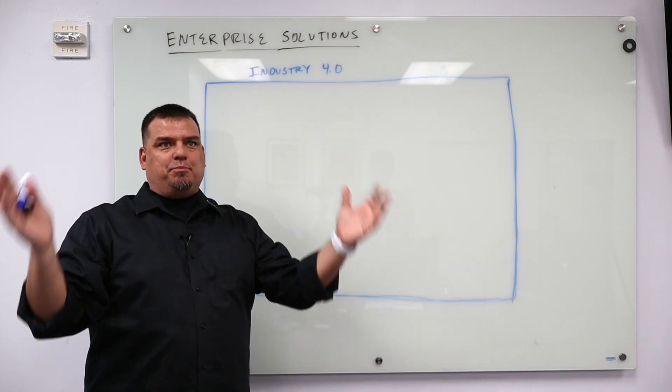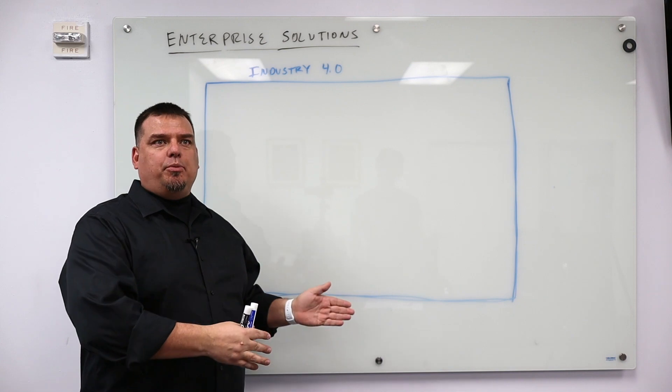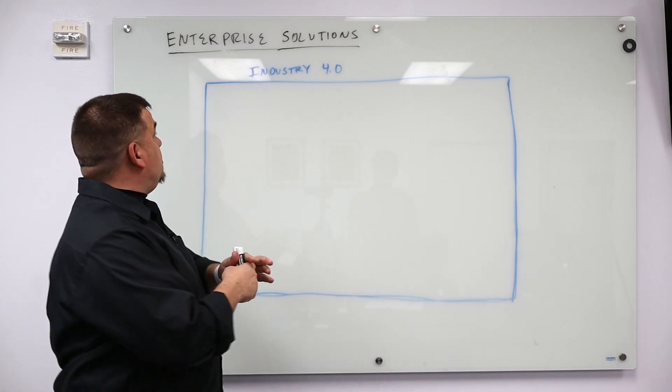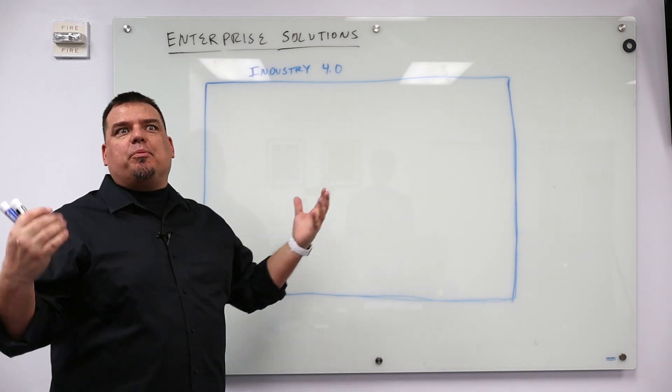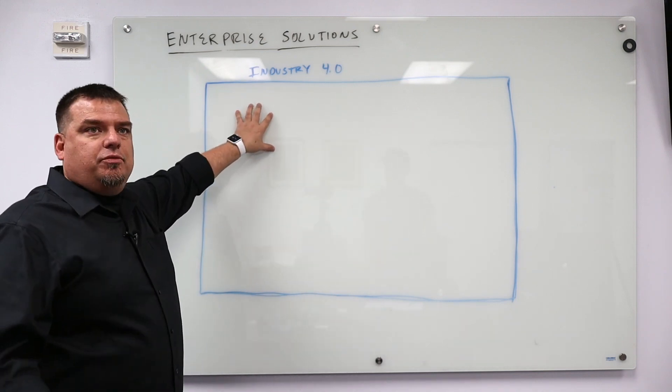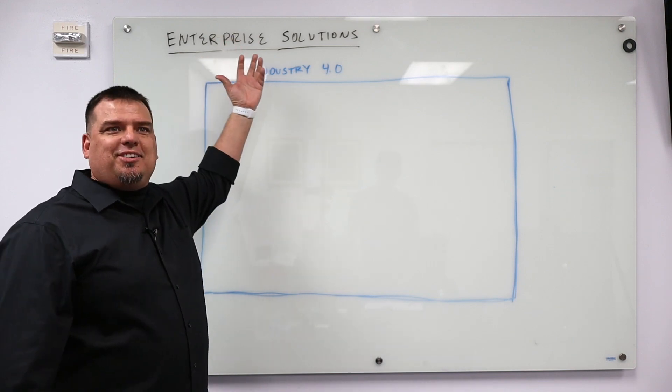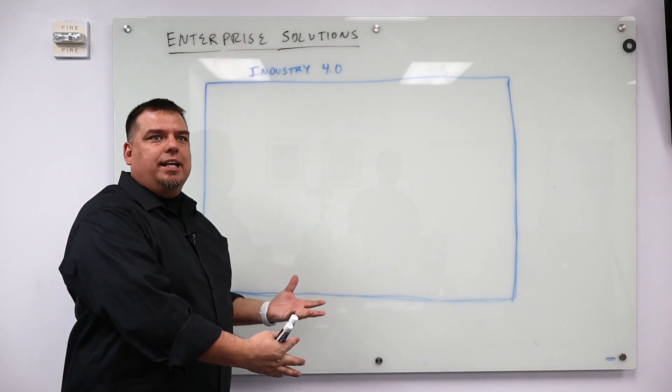Industry 4.0 is basically present day. Automation started in the late 70s, that was Industry 3.0. What we're talking about in this video series is how to deploy enterprise-class solutions. There's a whole host of subjects we've got to cover, and one of them is what is Industry 4.0. Industry 4.0 is the ability to develop enterprise-class solutions. That's ultimately what it is.